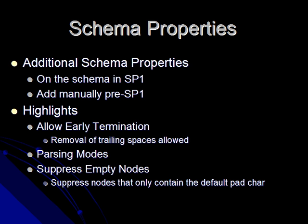Allow early termination will allow processing of flat file documents that have trailing spaces removed. If you're doing a positional document and you've defined your length of 200 positions, when trailing spaces are removed you might only get 50 characters in that record, and BizTalk doesn't really like that. But if you set allow early termination to true, once it hits the end of the document and finds the carriage return line feed or whatever your trailing delimiter is, it will just go on to the next record.